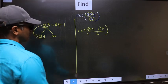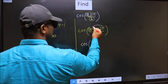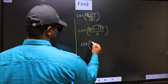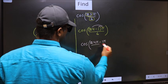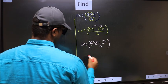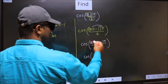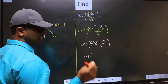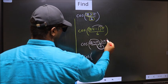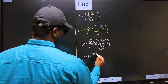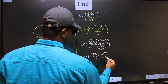Next, cos. Now you should open up the brackets. You get (24π − 1π) / 6. Now you should split the denominator in this way: that is 24π/6 minus 1π/6.